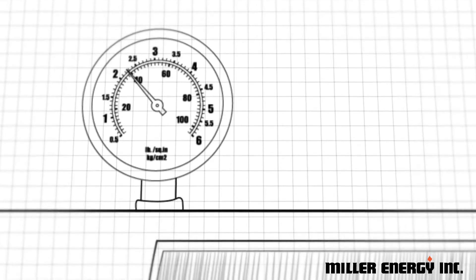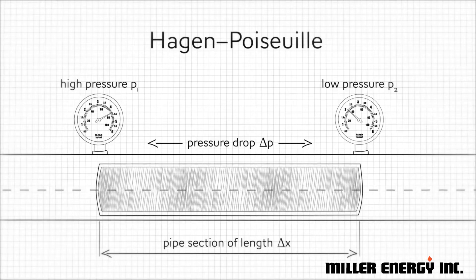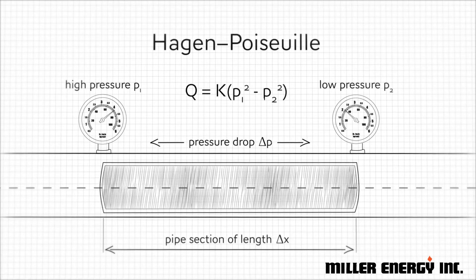By measuring the upstream pressure and downstream pressure across a laminar flow element, this equation can be used to relate these measured pressures to the actual mass flow.